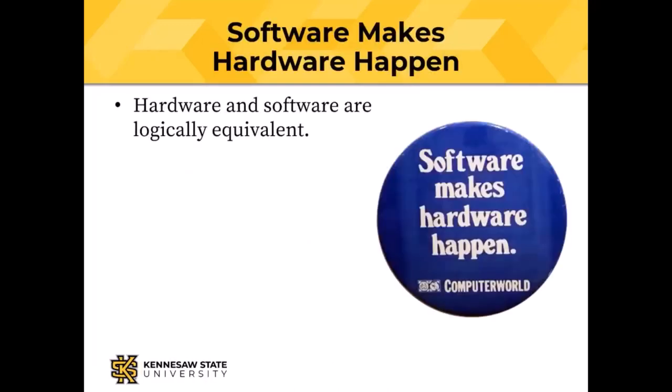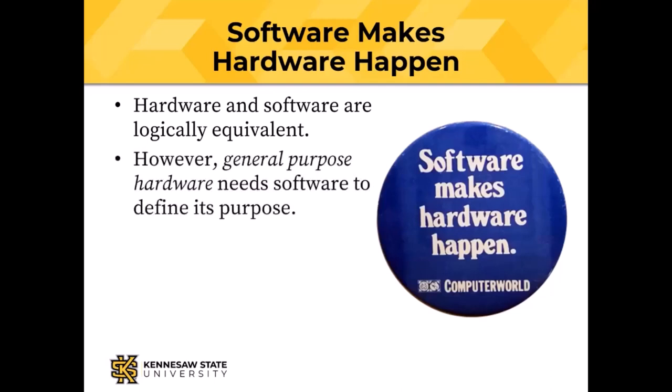Today we're going to talk about software. Hardware and software are logically equivalent — if you can build a piece of hardware, given the right actuators, you can write software to do the same thing. The microwave oven example illustrates this: springs and switches and dials, or a microprocessor-controlled version. However, general purpose hardware, like the von Neumann architecture computer, needs software to define its purpose.